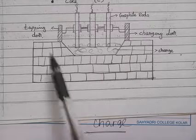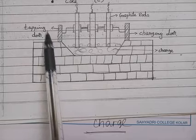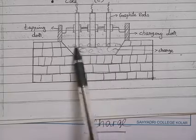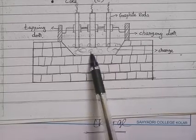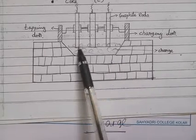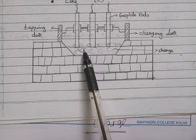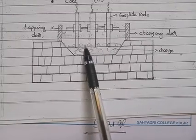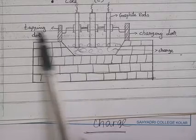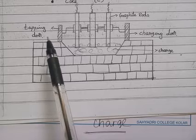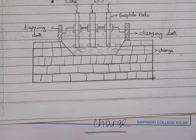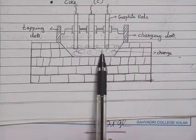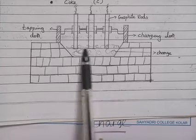When high electric voltage is produced, the raw materials fuse. Ferro silicon is formed, and the impurities form the slag. The slag is tapped out from the tapping door, and the ferro silicon is also tapped out from the tapping door. This ferro silicon contains 47 to 52% silicon with traces of carbon.